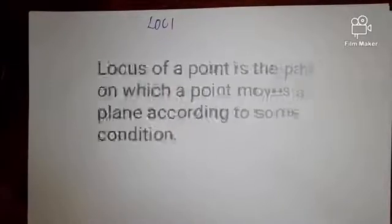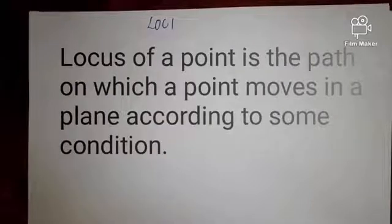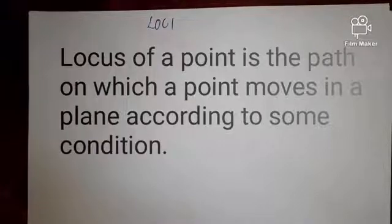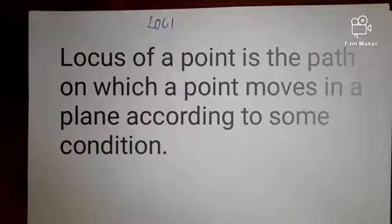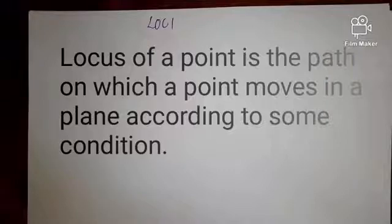Hi, hello. We are going to look at loci. Loci is the plural for locus. The locus of a point is the path on which a point moves in a plane according to some condition. So what we are trying to say is that if we have a condition that guides the movement or path traced by a point, then that particular path traced by a point moving under some condition on a plane is referred to as the locus of that point.